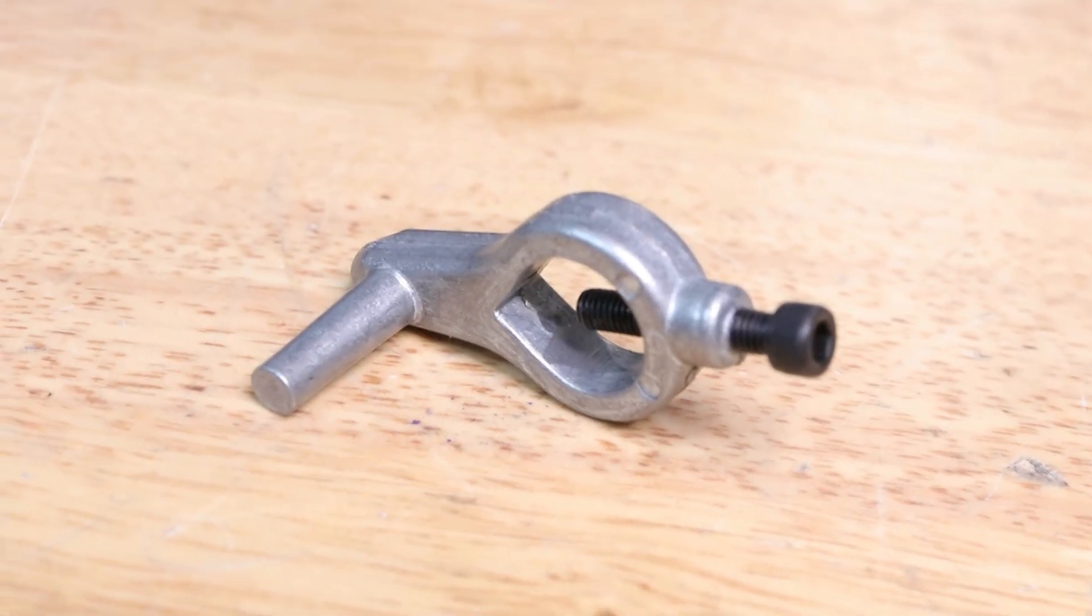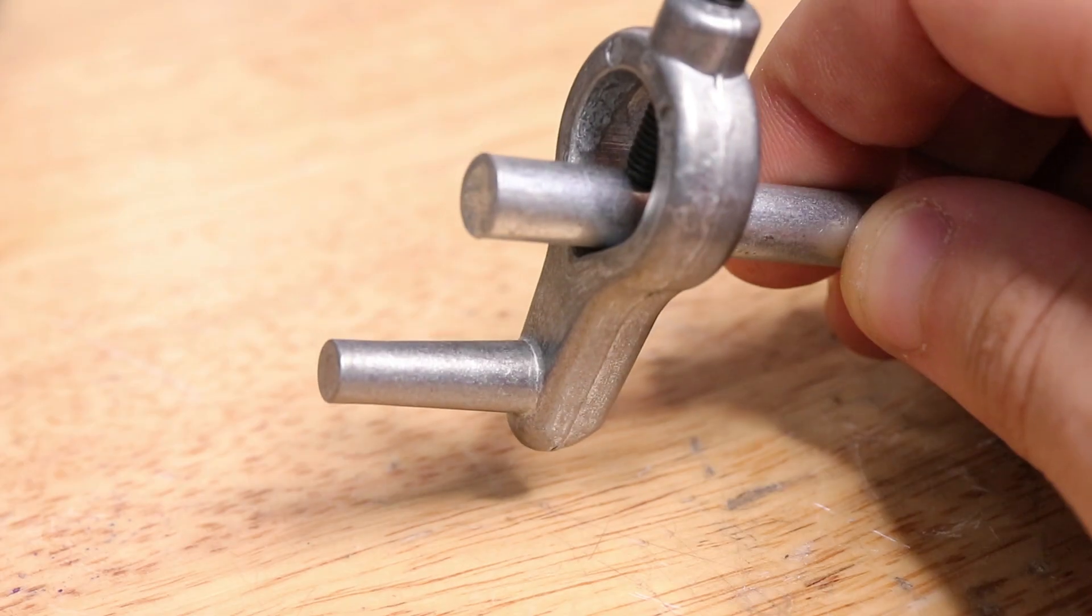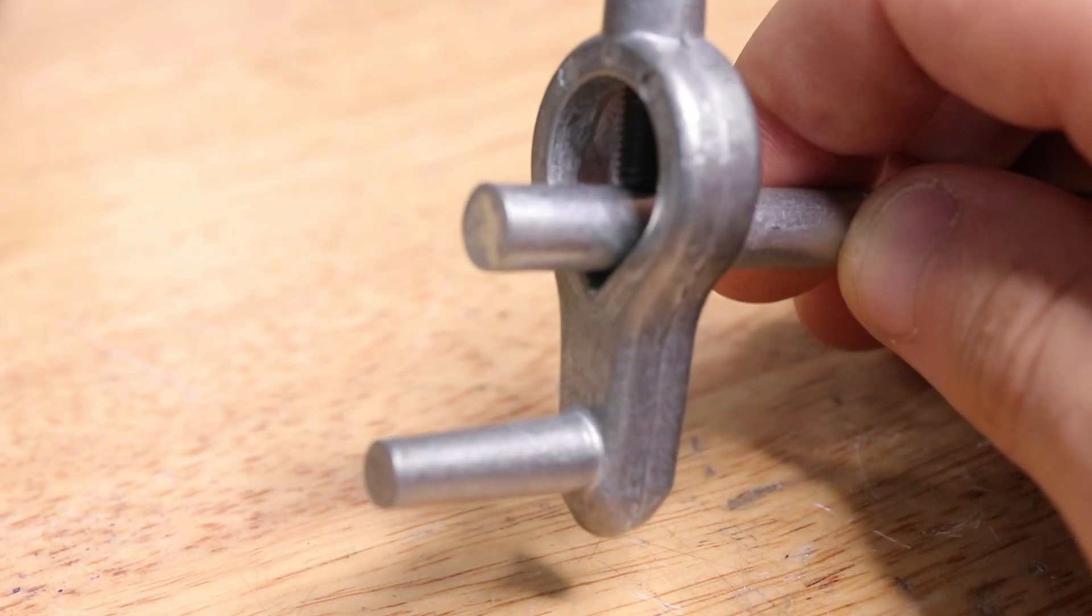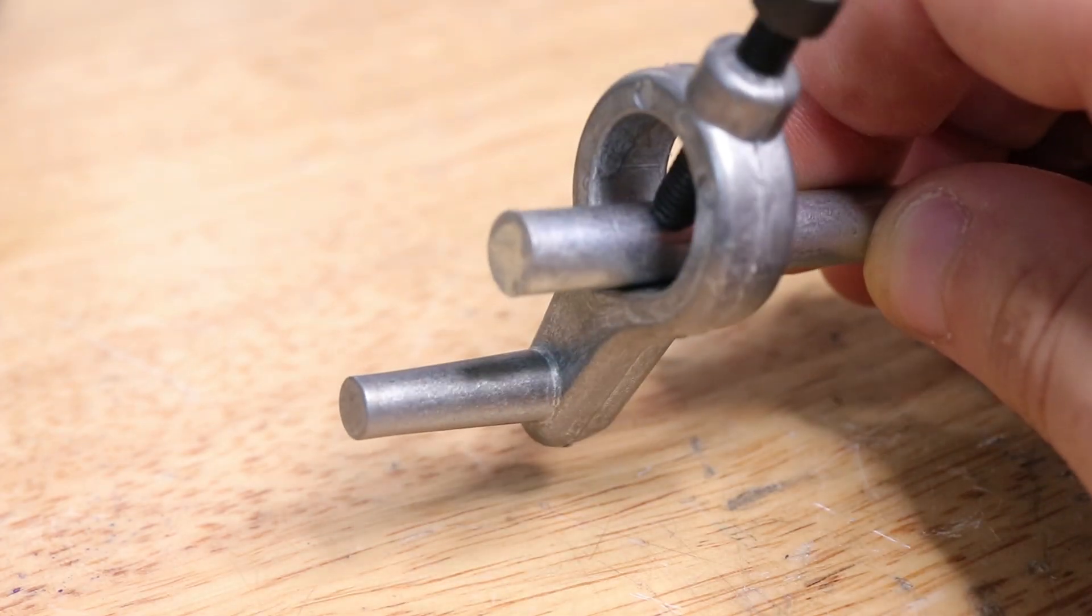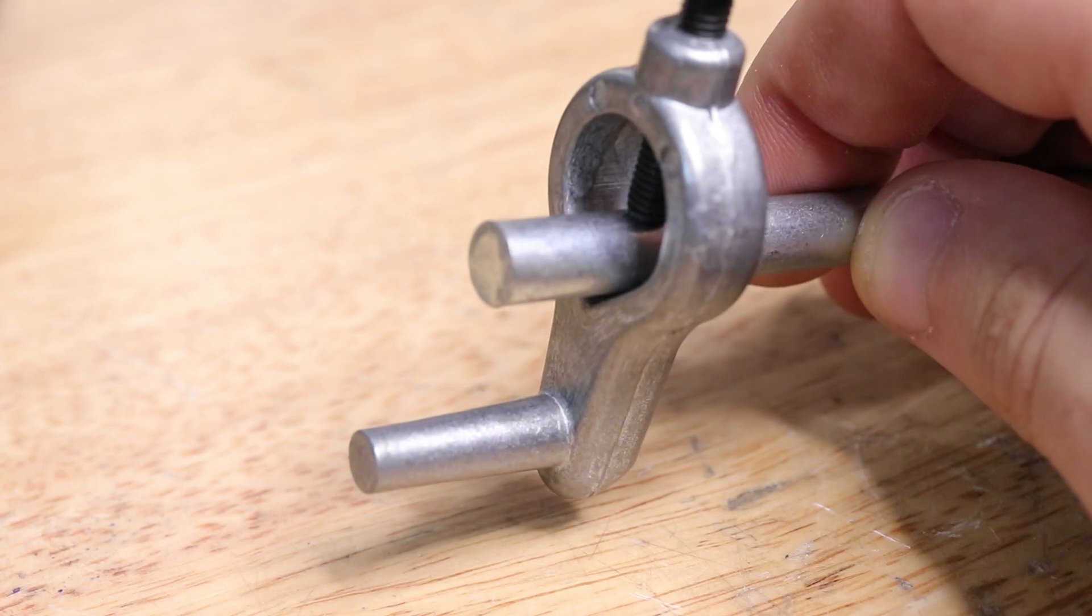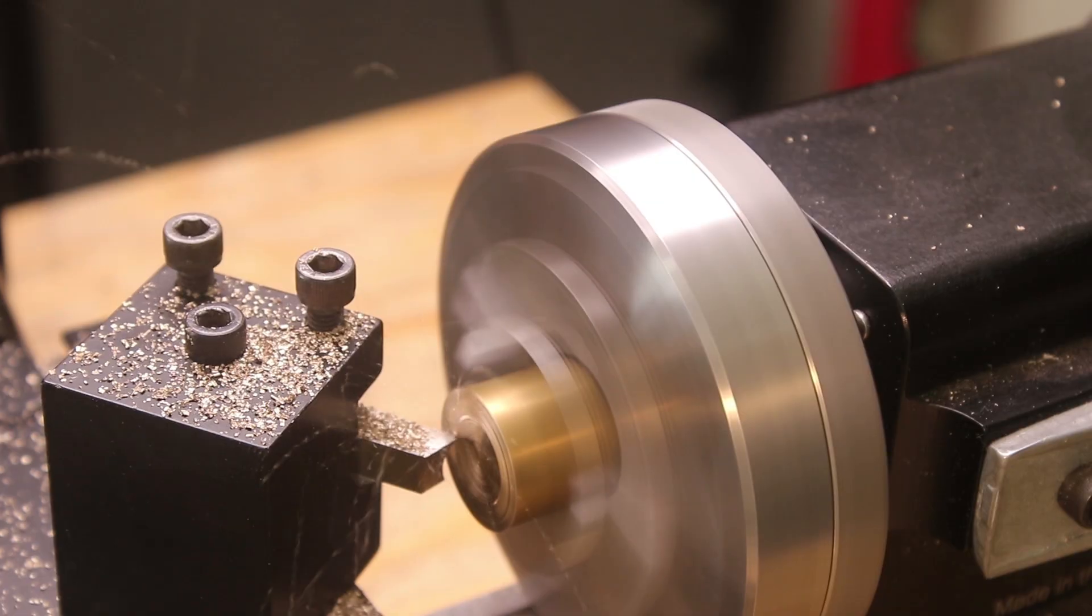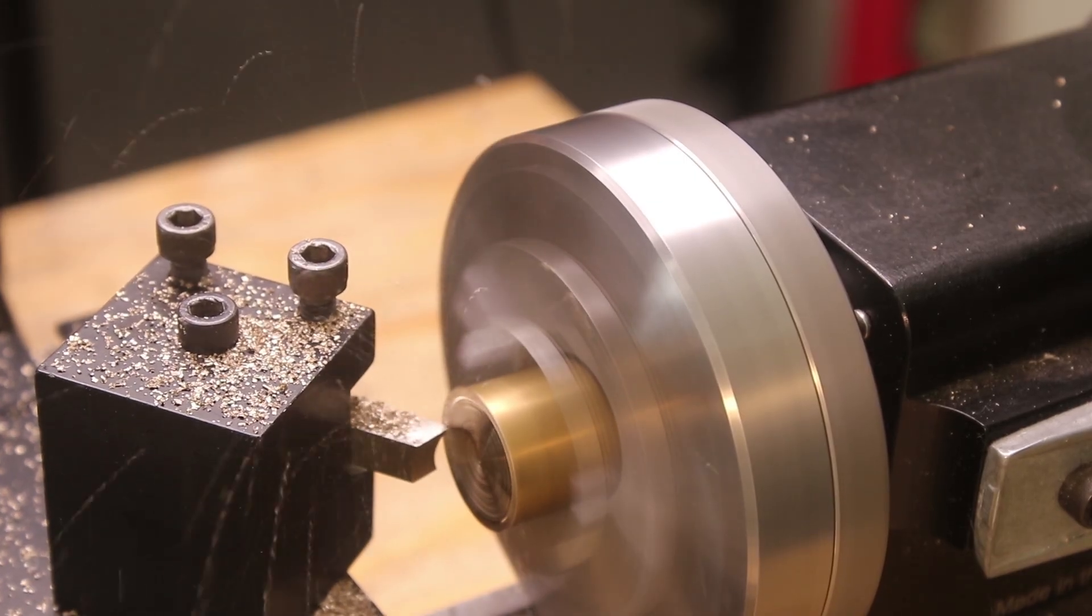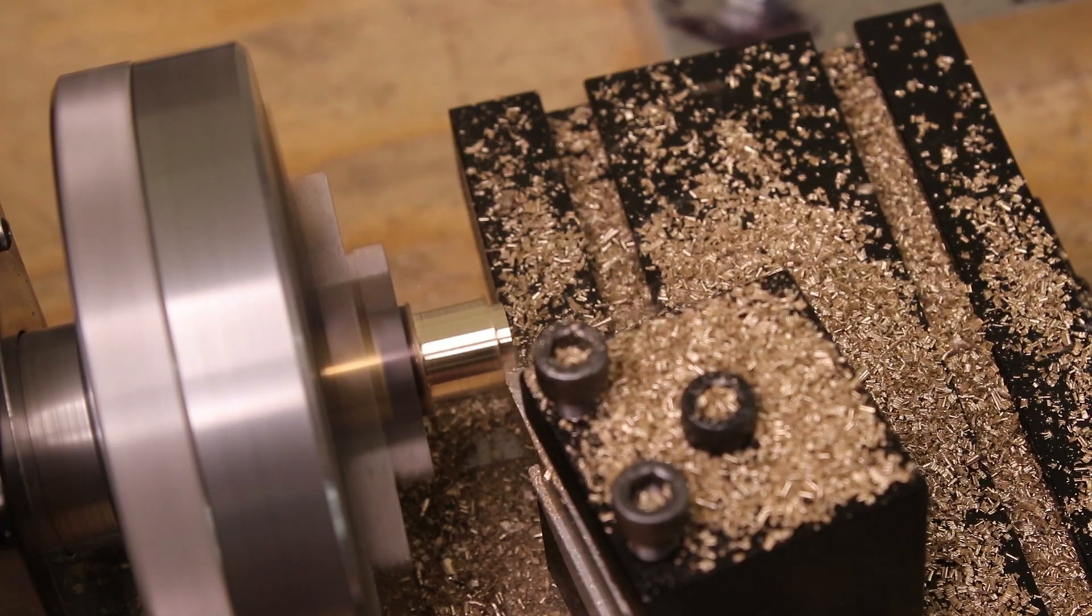Another method is turning between centers with a lathe dog and a driving plate which can produce some really low runout parts but this method of turning is not optimal for most situations that I run into and that's where the collet chuck comes in. If everything is set up correctly it should be a very low runout way of holding parts and it shouldn't take all that long to set up.